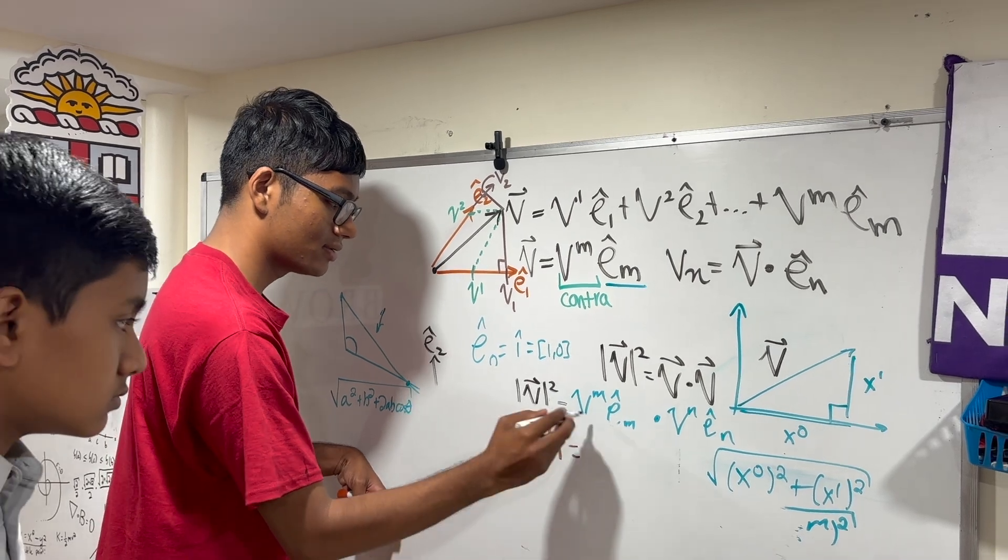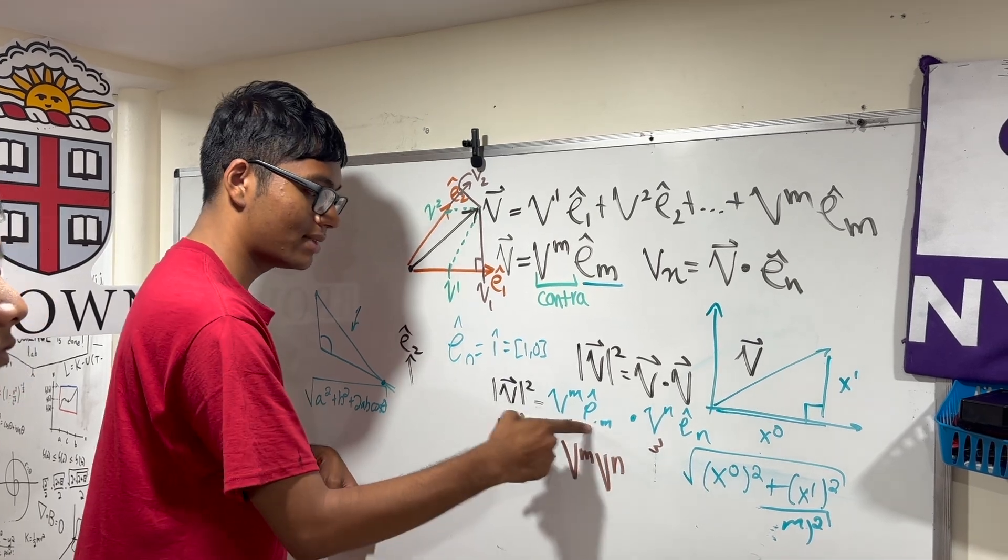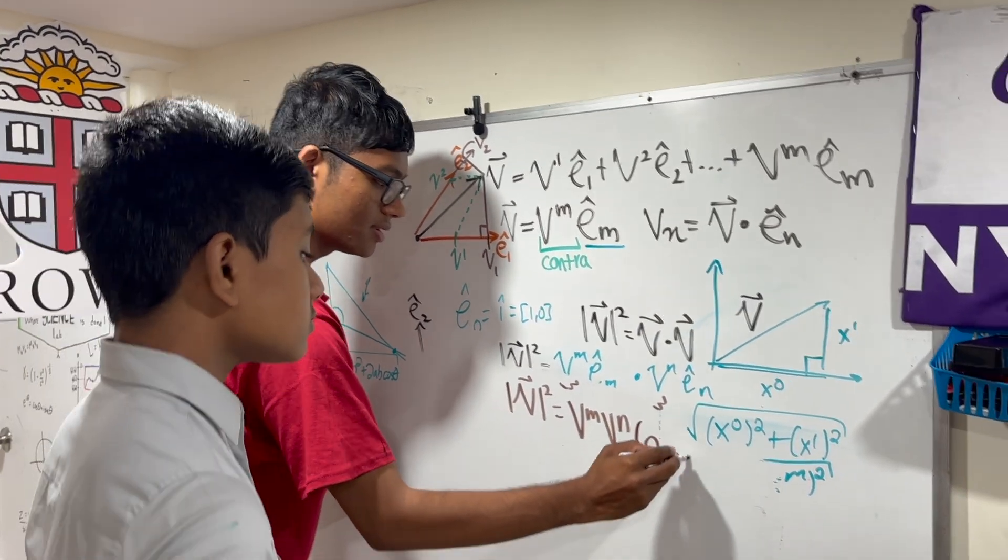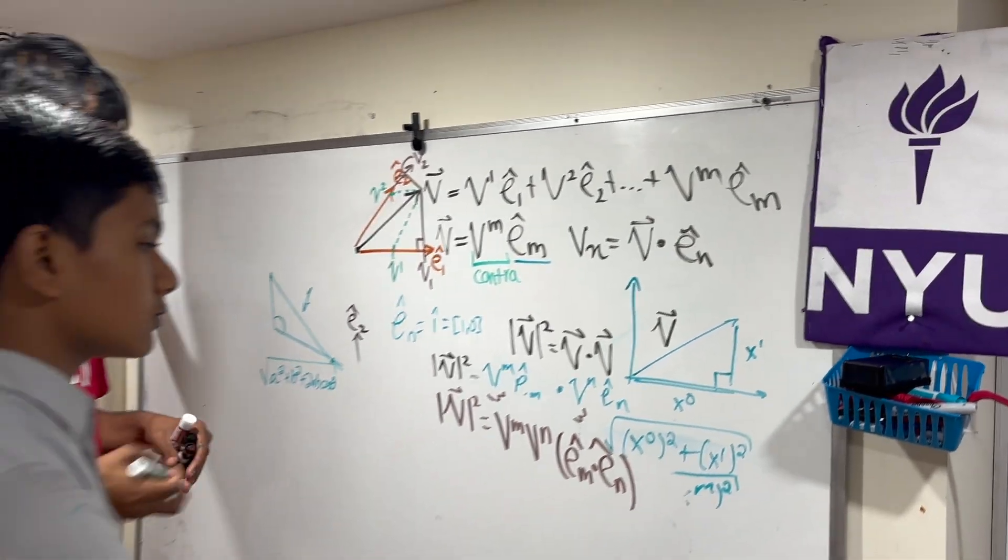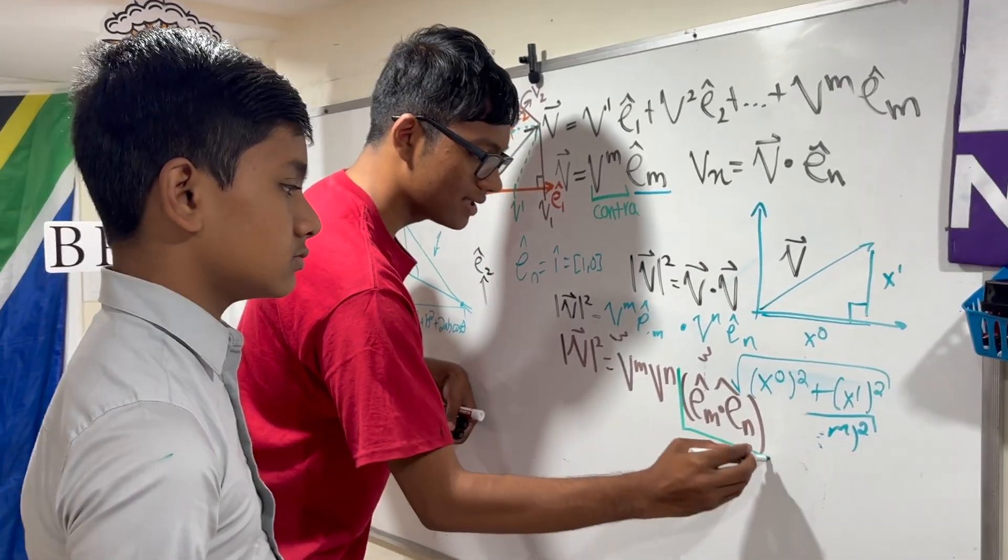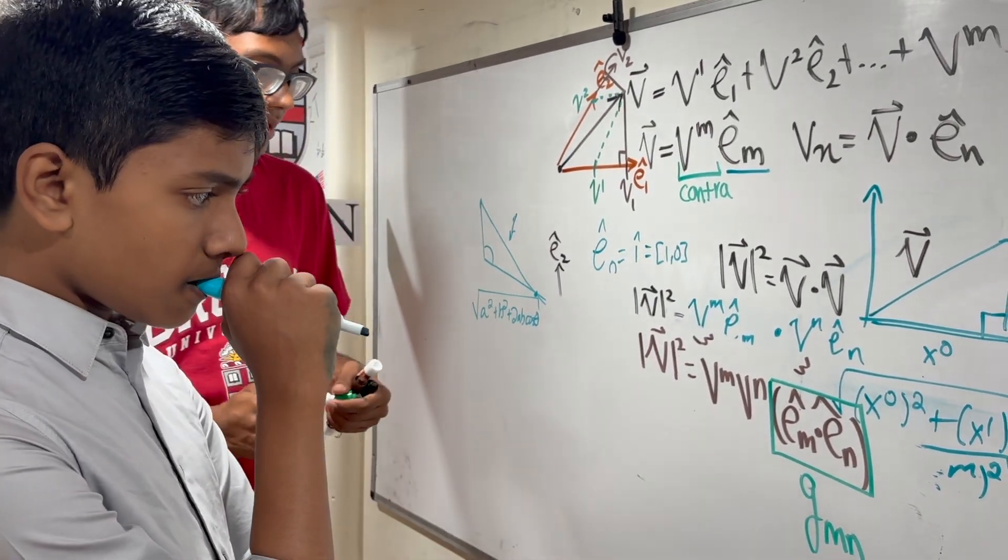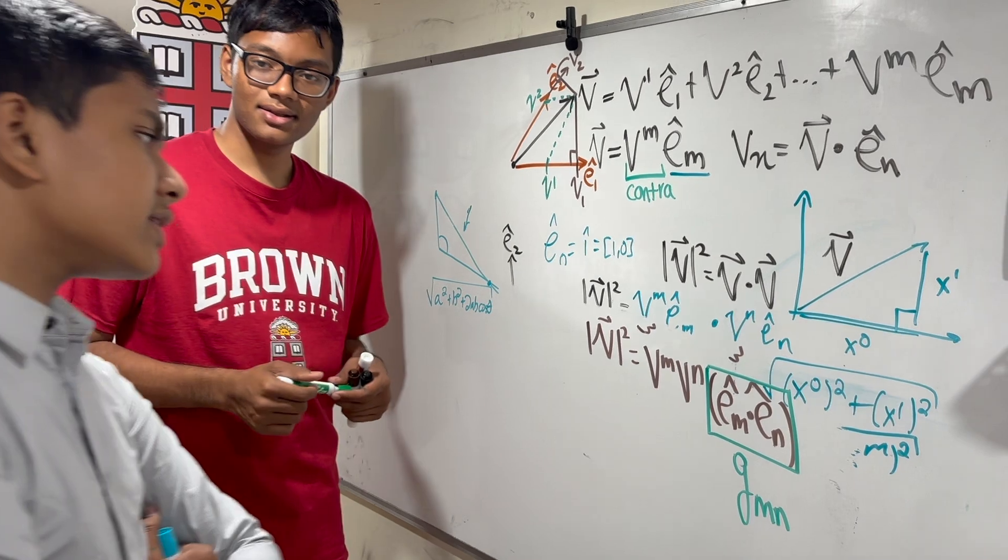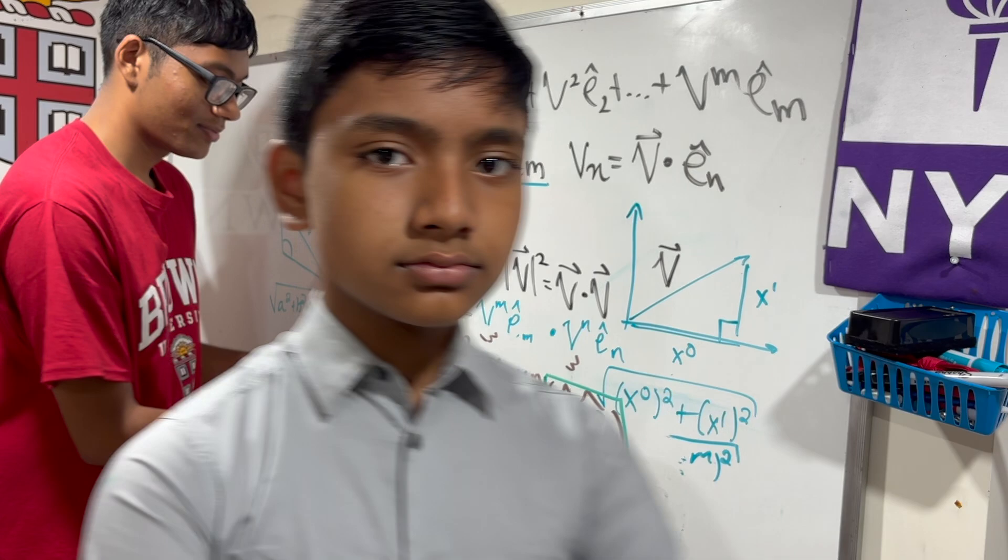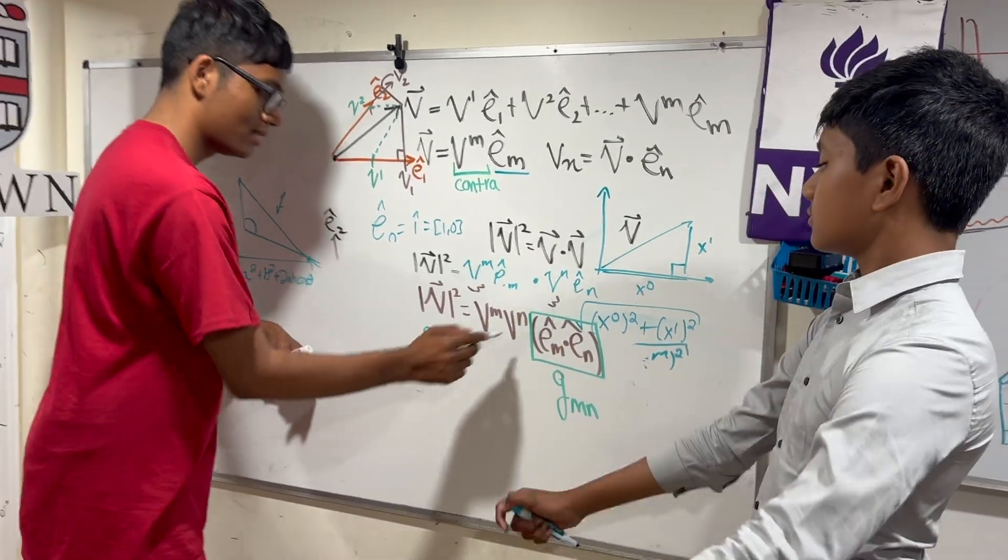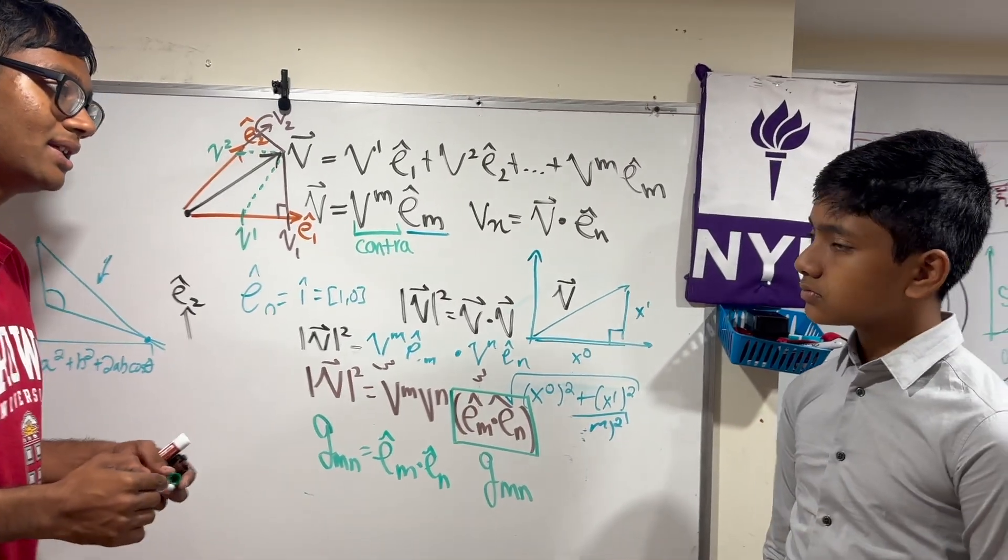Exactly. Very nice. So okay, that is our next thing. Let me focus on this over here. So now let me factor out the scalar parts. So v^m times v^n, and let me put the two vectors with each other, e_m dot e_n. And then this right here, believe it or not, is the metric. g_mn.